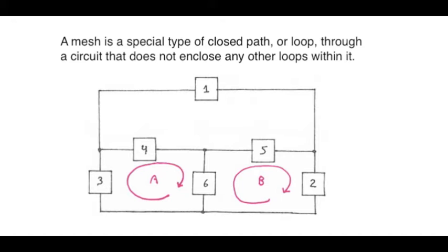A mesh is defined as a special type of closed path or loop in a circuit. It's special in that it does not enclose any other loops within it. For example, we see here a closed path labeled A, starting at the bottom of element 3, then going through element 3, proceeding through element 4, then through element 6, finally back to the bottom of element 3, completing the loop.